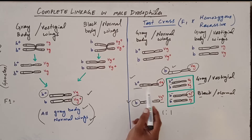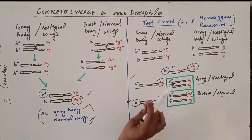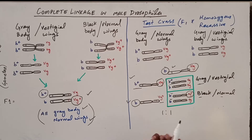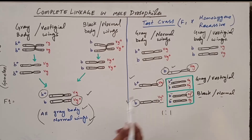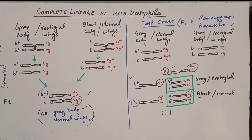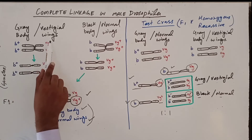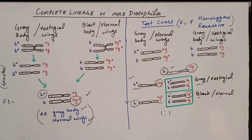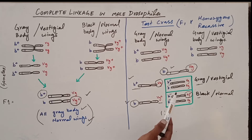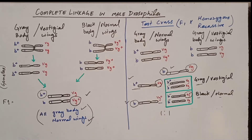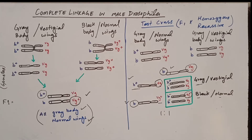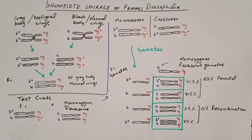Because these two genes did not separate from each other, there are only two phenotypes instead of four. This demonstrates complete linkage in male Drosophila — the body color gene and the wing shape gene do not separate. Normally a test cross gives four phenotypes, but here there are only two, which is the result of complete linkage.